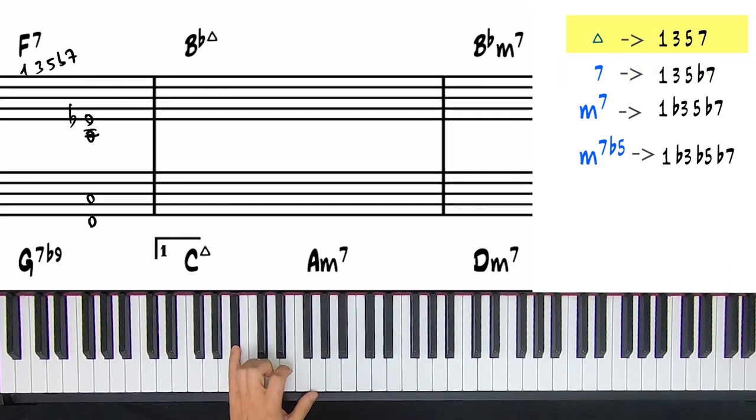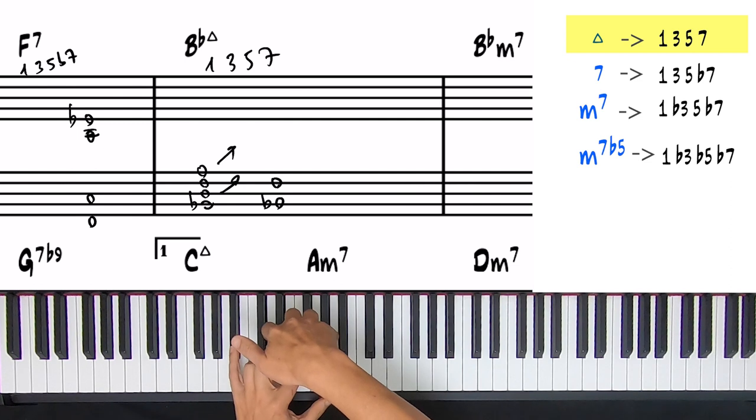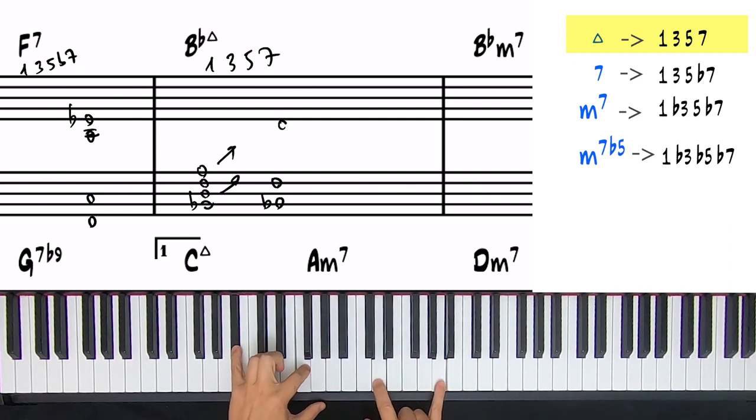B flat major 7. B flat, and here's all four notes. I don't need to add any accidentals. B flat to D is a major 3rd. B flat to F is a 5th. And B flat to A is our major 7th. Perfect. Then we turn it into a drop 2 and 4 voicing by moving these two notes up.